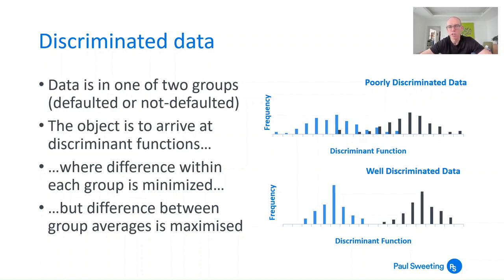Here's a chart showing what I was describing: you've got two groups, either defaulted or non-defaulted firms. You can have more than two groups in discriminant analysis, but for credit we're just considering two. The objective is to arrive at discriminant functions where you minimize the difference within each group but maximize the difference between the averages of the two groups. In the top chart, the values of the discriminant function in terms of frequency overlap quite a lot — not well discriminated. In the bottom chart, there's much tighter grouping — much better discriminated data — and we're trying to choose values of beta that give a picture closer to the bottom.